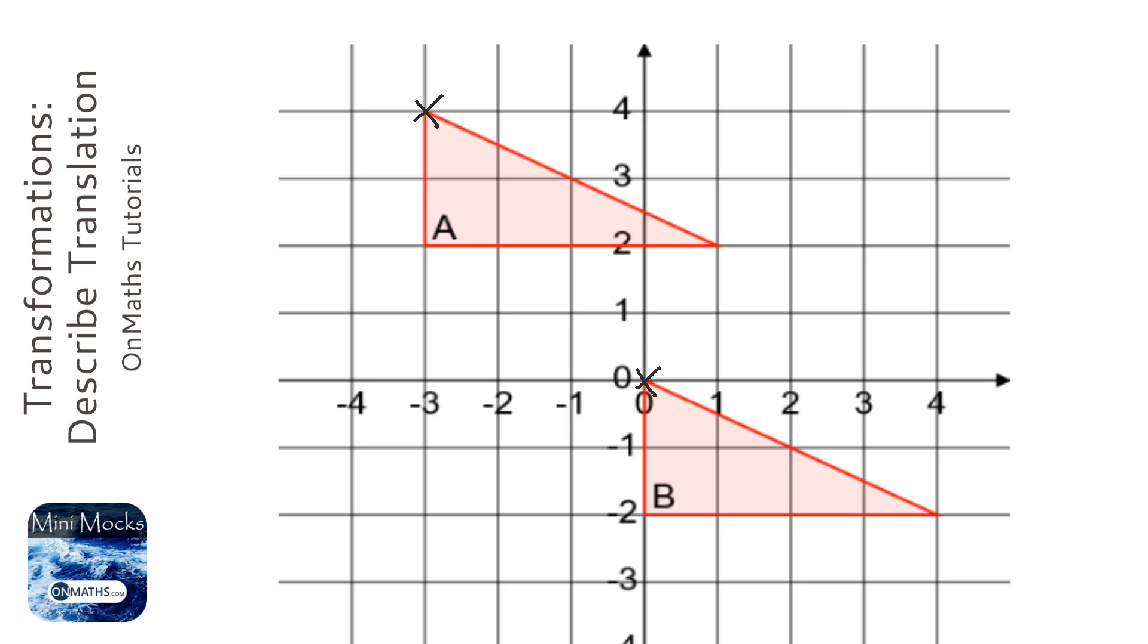So one, two, three - I'm in line with B now. And then I'm going to go down, so one, two, three, four down.